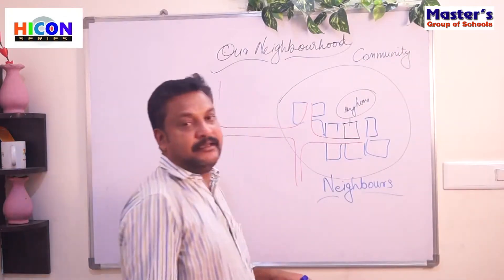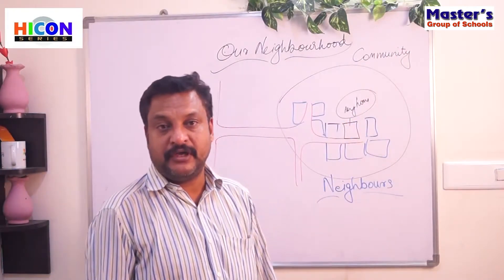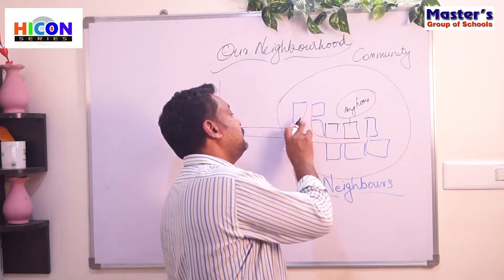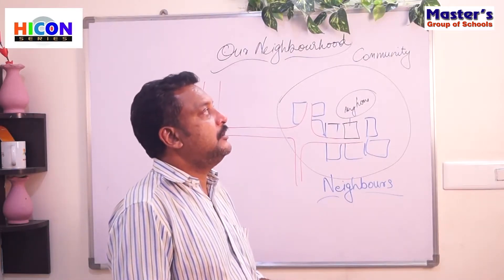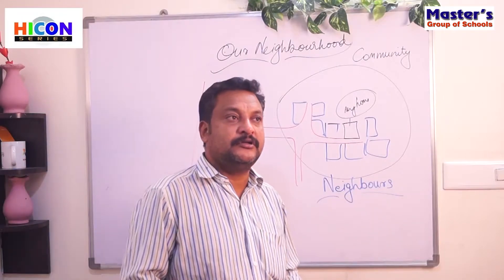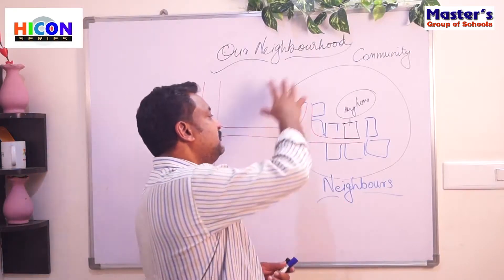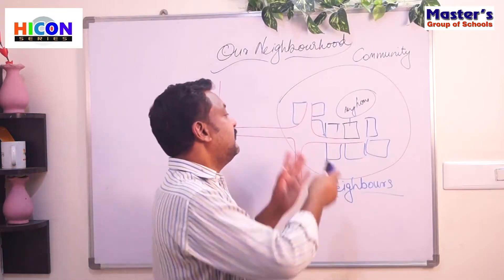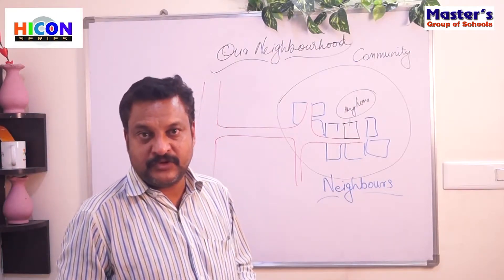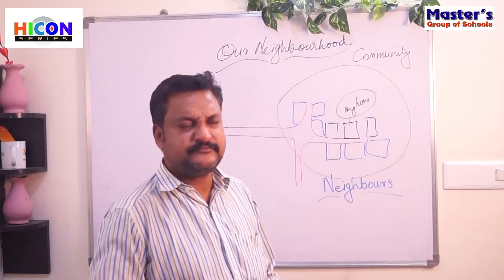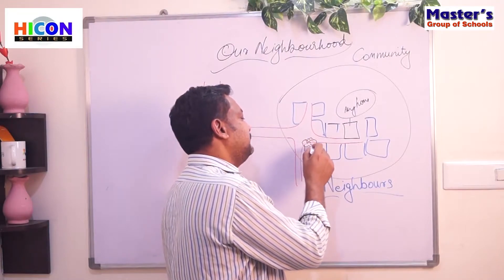We, along with our neighbors, together make a community. If there is anything happening, all the people will think about it together. For example, we have a festival called Vinayaka Chaturthi. If all the people think in the same way, they will have an idol of Lord Vinayaka kept there and do poojas together. Or if there is a dumping point where all the waste is dumped everywhere, that becomes a community concern.